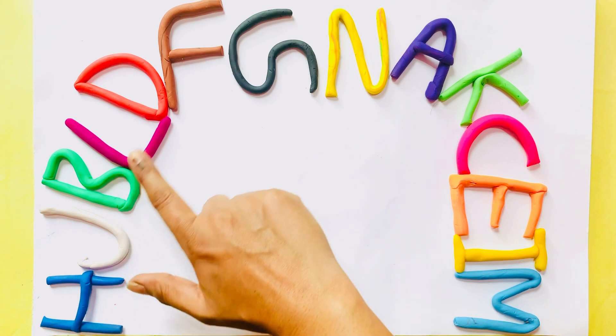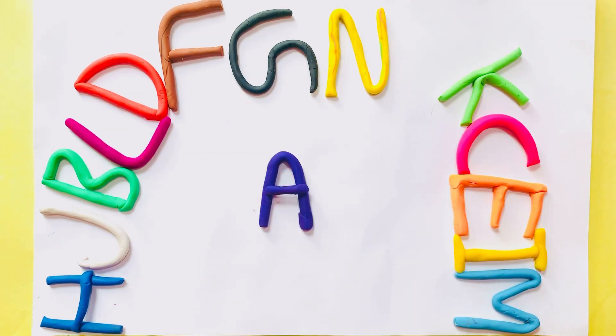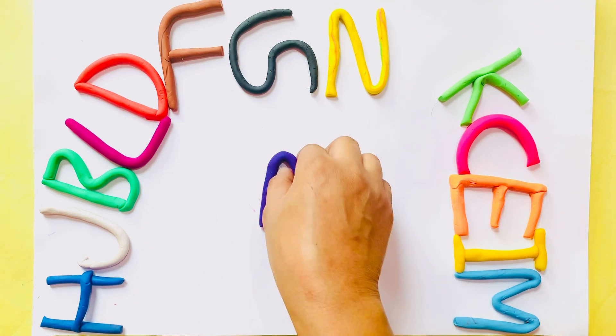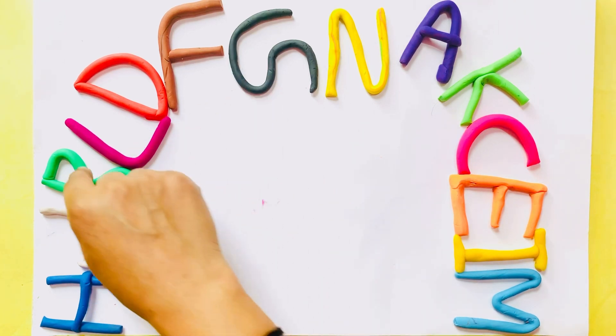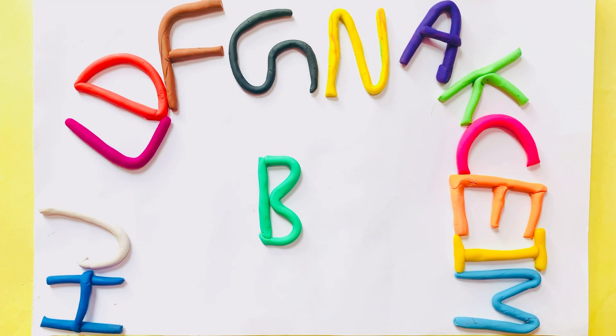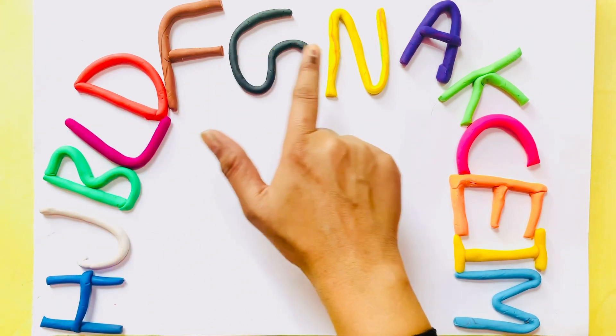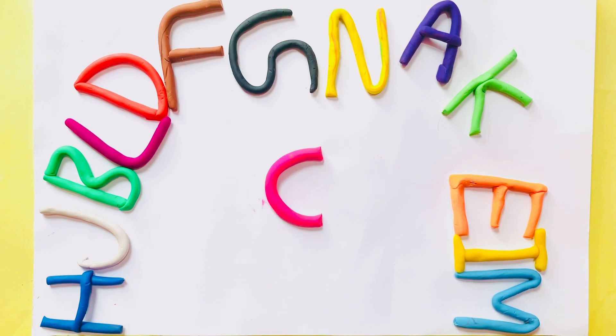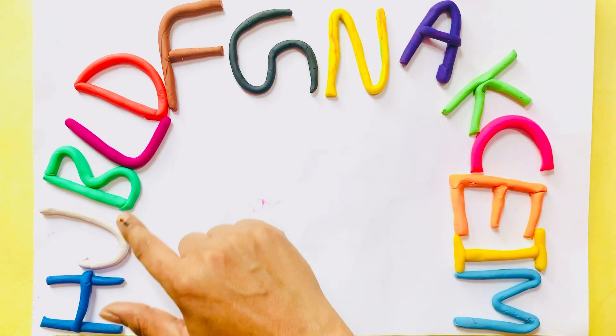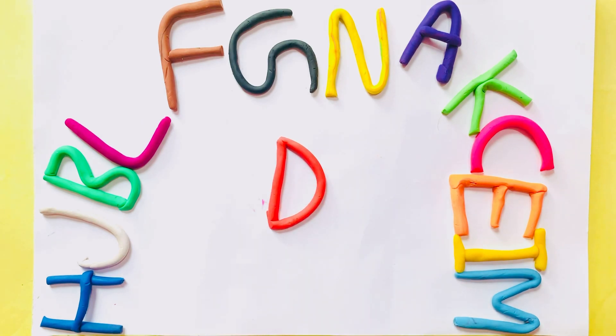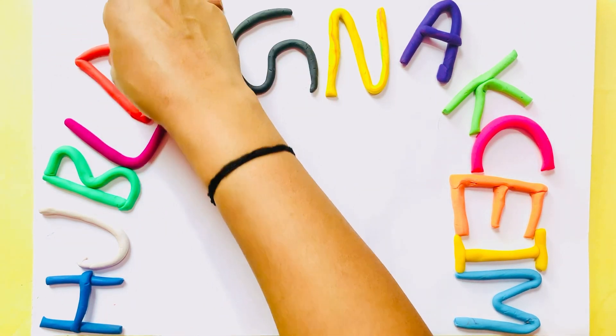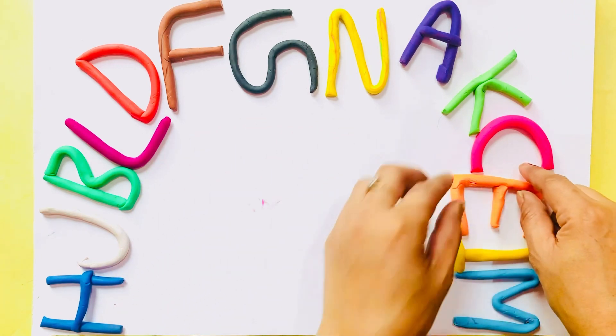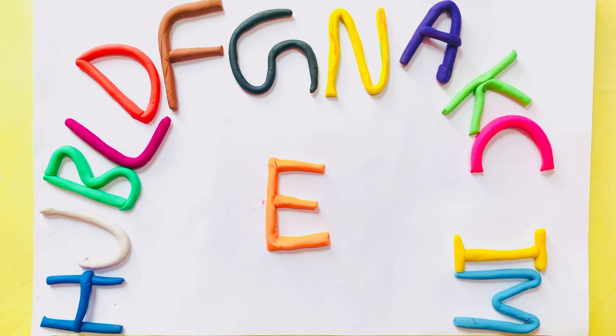A, A, A for Apple, A for Apple. B, B, B for ball, B for ball. C, C, C for cat, C for cat. D, D, D for dog, D for dog. E, E, E for elephant, E for elephant.